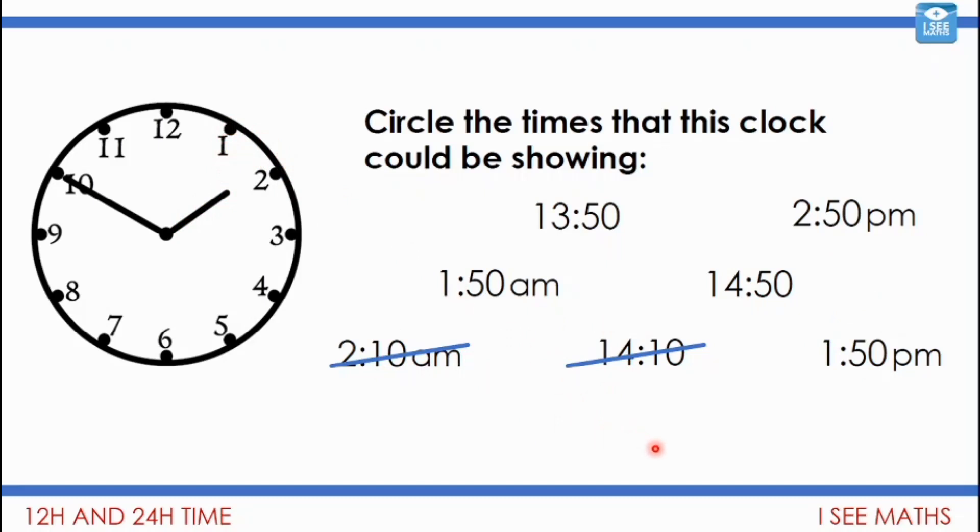Which of those times could it be? Well, it could be 1:50, just before 2 a.m. It could be 1:50 p.m., so from the clock we don't know if it's a.m. or p.m. It could be 13:50. Now there's one that actually wasn't included—it could also just be 1:50 on a 24-hour clock as well.